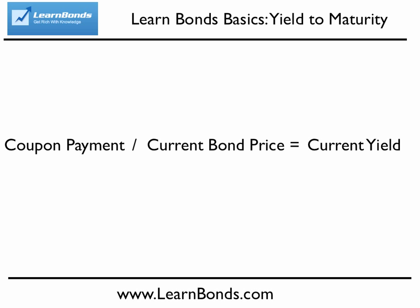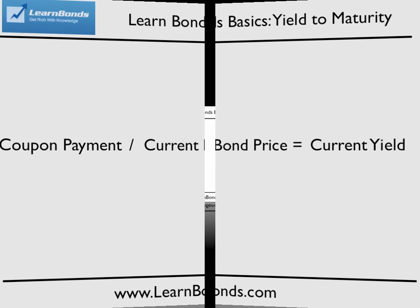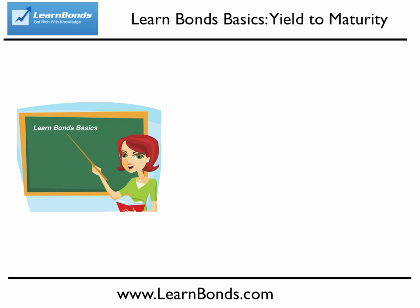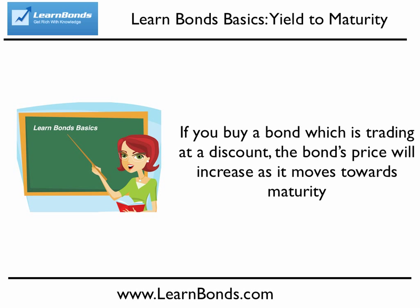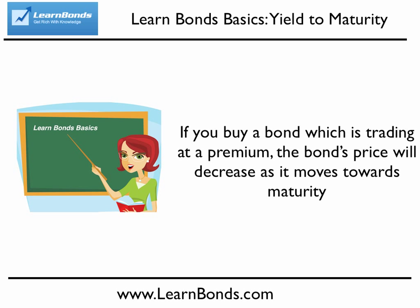However, when investing in a bond that is trading at a premium or a discount, current yield is a misleading indicator for the total return you can expect. If you buy a bond that is trading at a discount, you will be paid the face value when held to maturity. As the face value is greater than the price you paid for the bond, you will have a gain. This gain is not included in the calculation of current yield. In the case of a bond which is trading at a premium, you will receive less than what you paid at maturity, which is also not included in the current yield calculation.